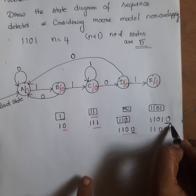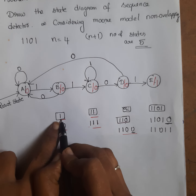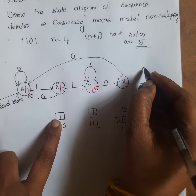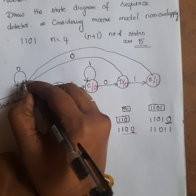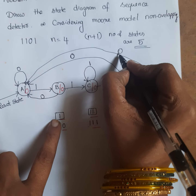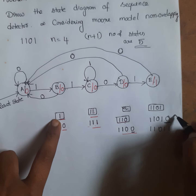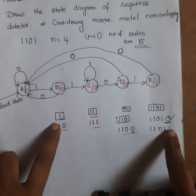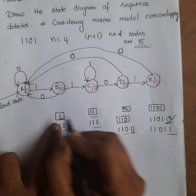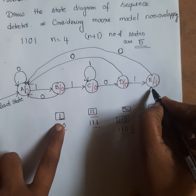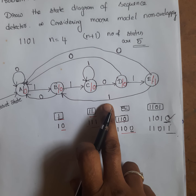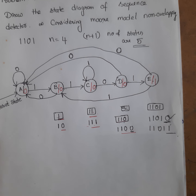For state E, we check for inputs 0 and 1. The bits detected at state E are 1, 1, 0, 1. For input 0: compare the last bit with the 1-bit state — 1 vs. 0 — no match, so go to the reset state A. For input 1: compare the last bit with the 1-bit state — 1 vs. 1 — both bits match, so go to state B. This completes the state diagram of the given sequence considering the Moore model non-overlapping method.